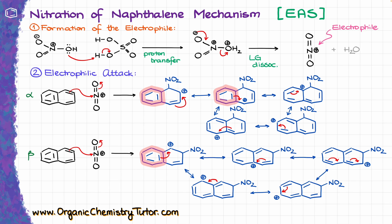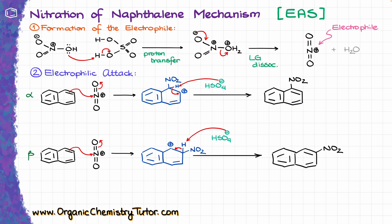But we know from experimental evidence that the first carbocation — from alpha attack — must be more stable, as it yields the major product at a staggering 9-to-1 ratio. So there has to be a difference, and there is one. If we pay very close attention, we can see that the first set has two resonance structures with an intact aromatic ring, while the second set only has one such structure. That difference explains why the first carbocation is so much more stable. Intact aromatic moieties affect overall stability far more than the position of the carbocation. To wrap up the mechanism, we just eliminate the proton from the position where we attached the nitro group, and we're done.